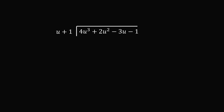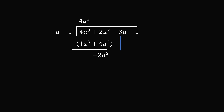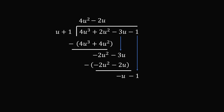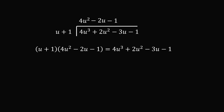Let's do this long division. We take the cubic equation and divide by u plus 1. First we multiply by 4u squared, giving 4u cubed plus 4u squared, which we subtract. The 4u cubed terms cancel, leaving minus 2u squared. We drop down minus 3u, giving the next term minus 2u. Multiplying minus 2u by u plus 1 gives minus 2u squared minus 2u. Subtracting leaves minus u. We drop down minus 1 and subtract minus u minus 1, leaving no remainder. So the cubic divides evenly to give the quadratic 4u squared minus 2u minus 1.